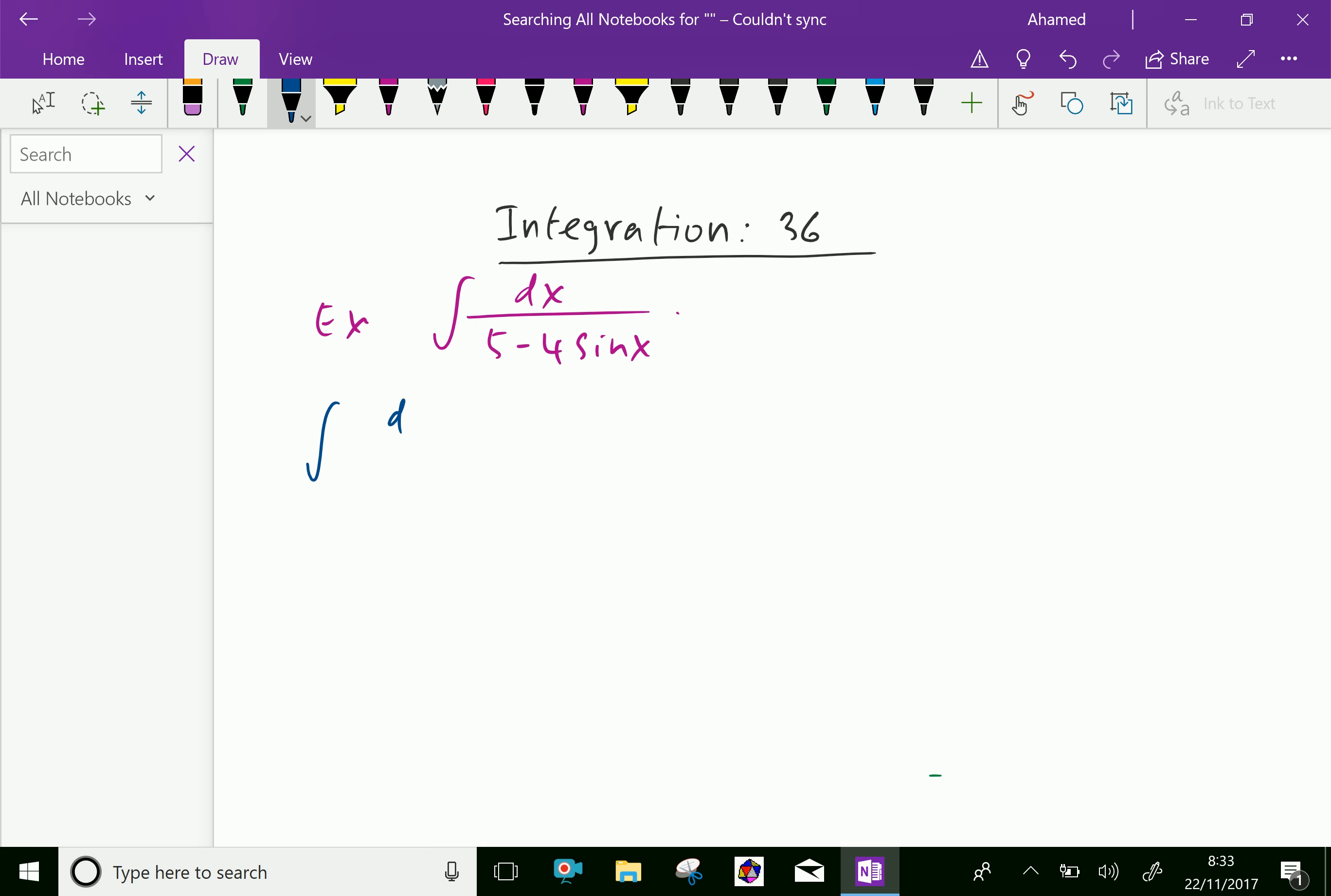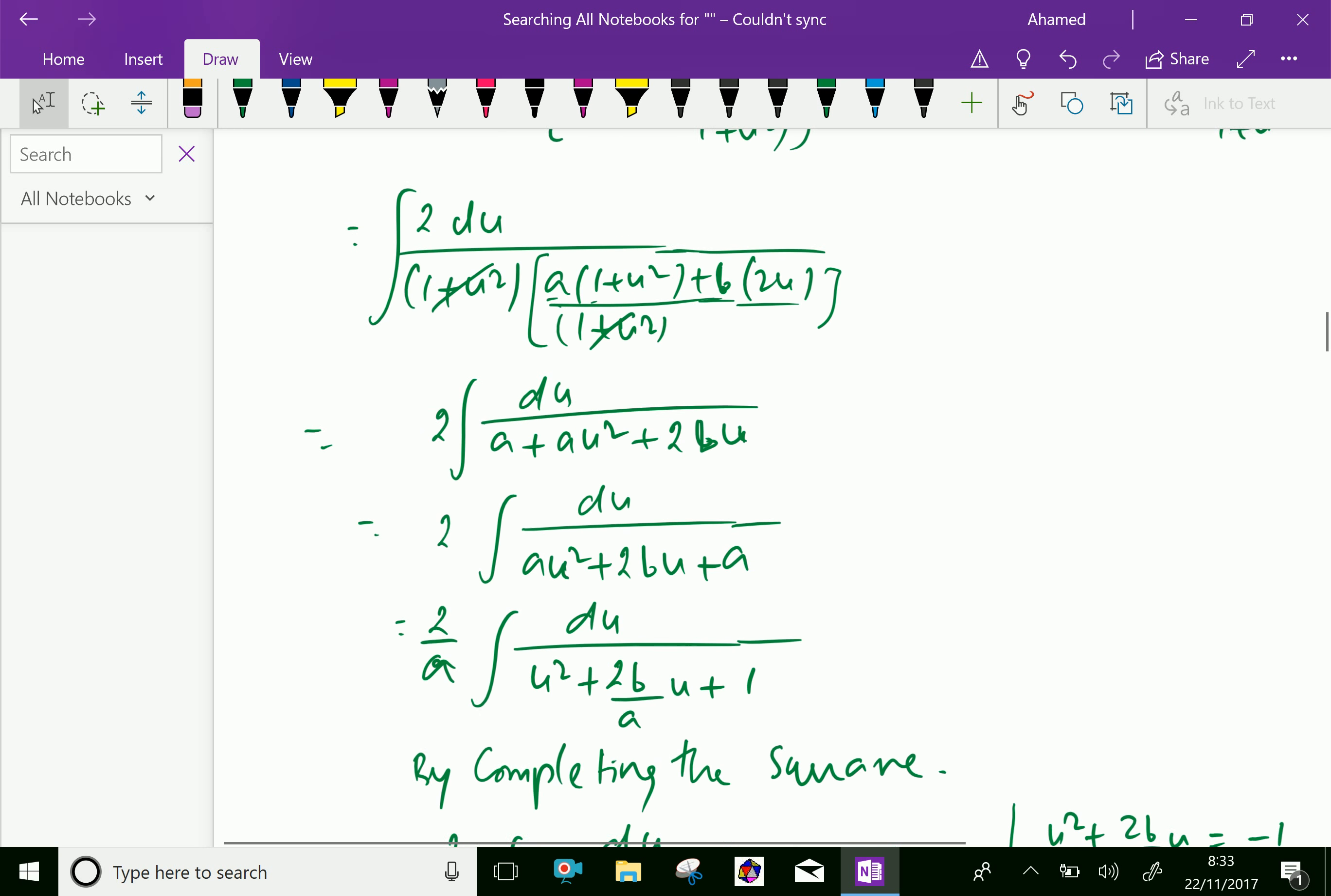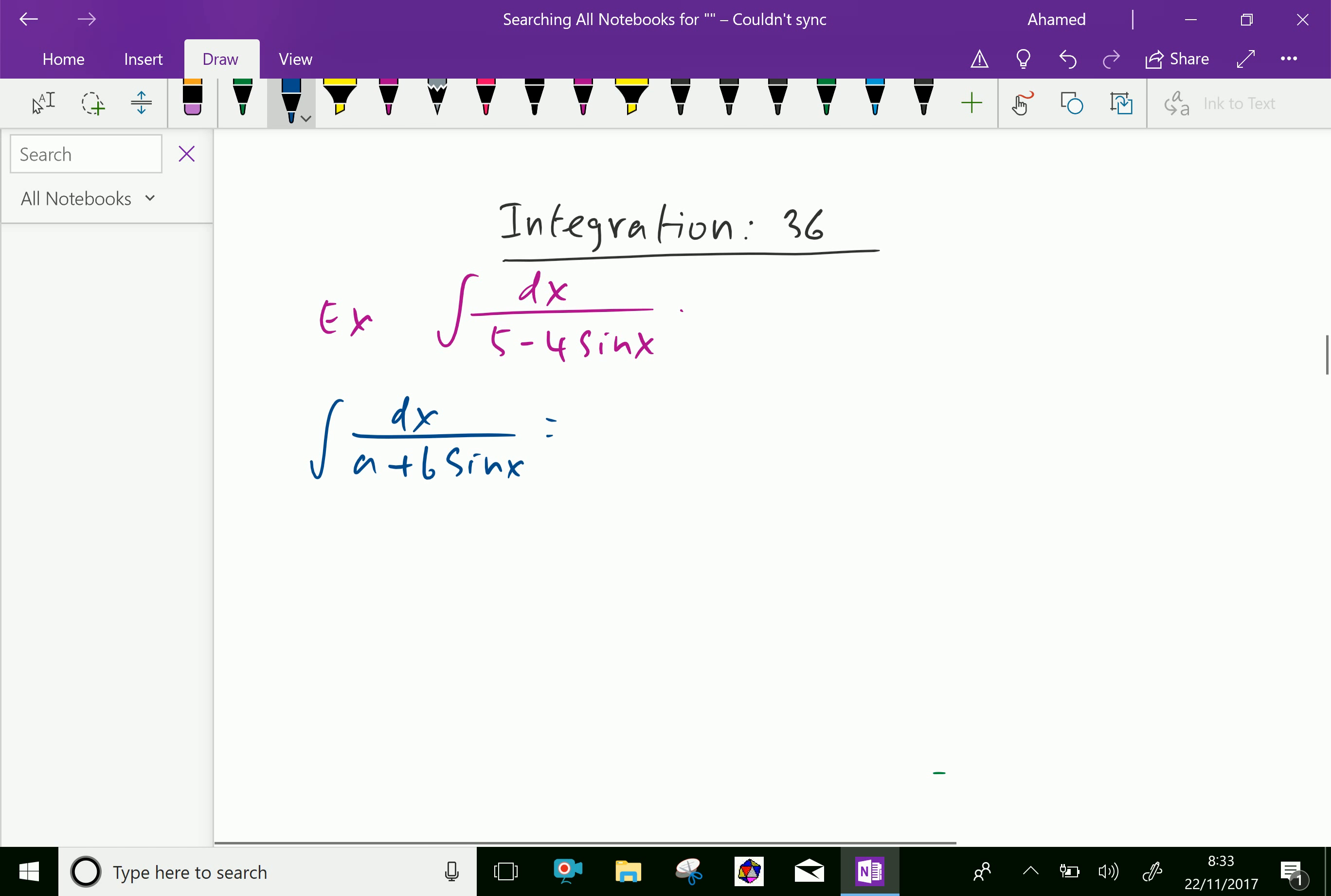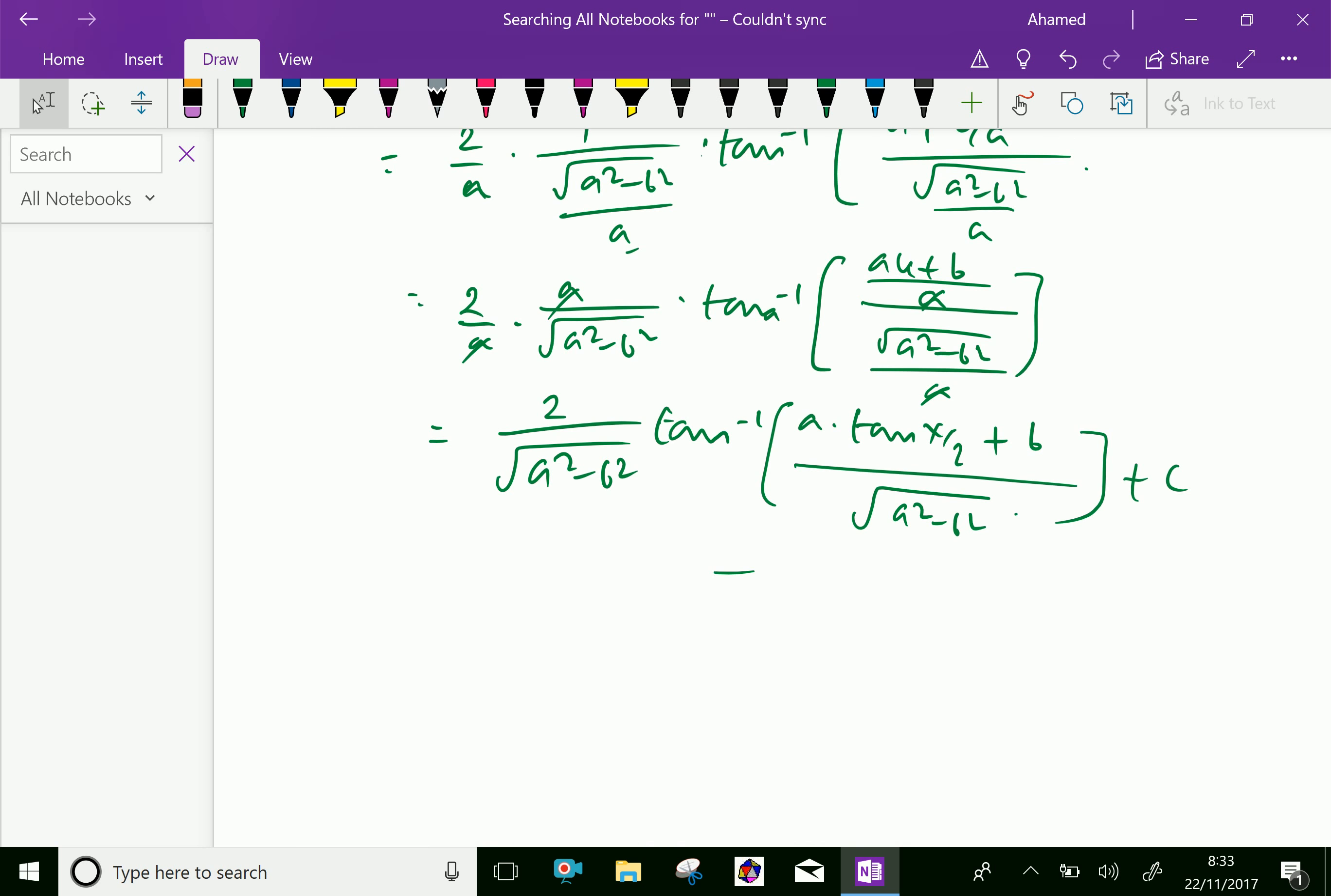Integral of dx over a plus b sin x equals... we discussed previously that this gives 2 over square root of a squared minus b squared, tan inverse of a into tan x by 2.